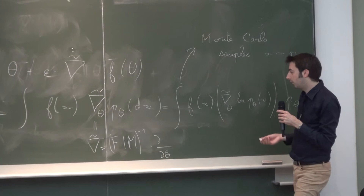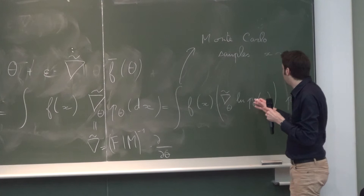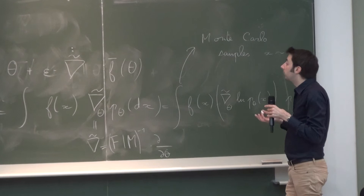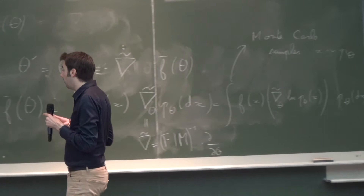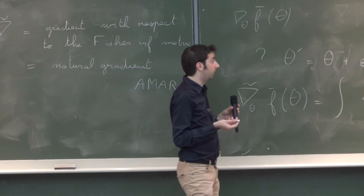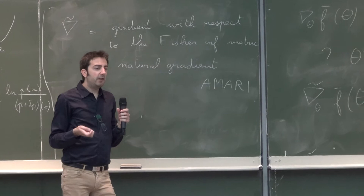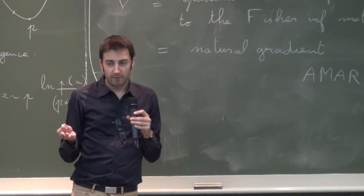If you have a specific family of p_theta, in principle you can do everything. You can move in theta space by using samples. This means: if you have a current belief about where the good points are, you can just take a few samples from the current belief.